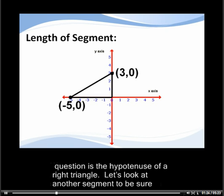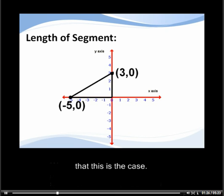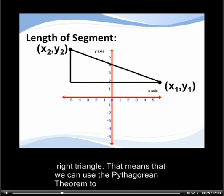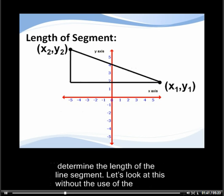Let's look at another segment to be sure that this is the case. Again, we can see that the segment in question is, in fact, the hypotenuse of a right triangle. That means that we can use the Pythagorean theorem to determine the length of the line segment.